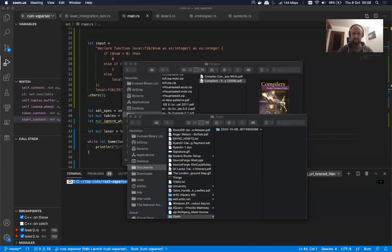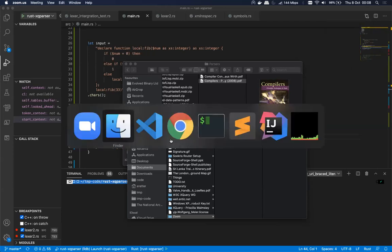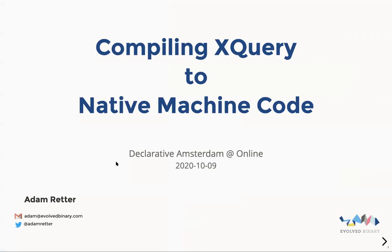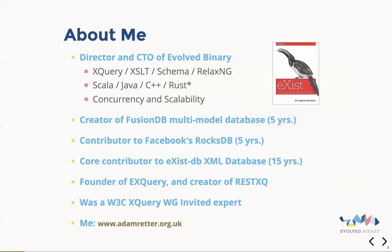Let's take a look at what we've been doing here at Evolve Binary. We've been working on compiling XQuery into native machine code. This will become relevant later, but recently I've been learning a little bit of the Rust programming language, and we'll see how we get on with that later for this purpose.